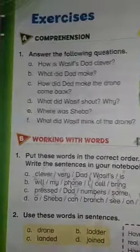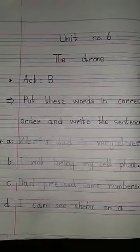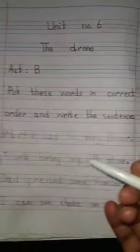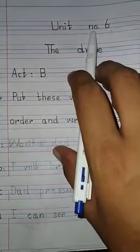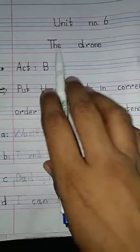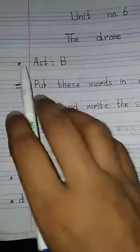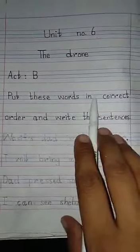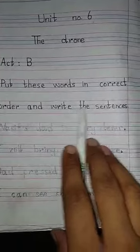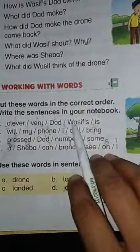Now students, the rest of the work will be in our notebook. Let's start our work on the notebook. We will set it up properly: Unit Number 6, Unit Name: The Drone. We will write Exercise B, then write the statement: Put these words in correct order and write the sentences.